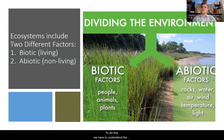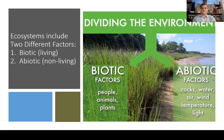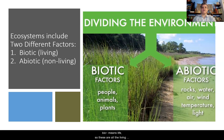To do this, we have to understand the two different factors that exist in an ecosystem. The first is biotic. Bio, as you recall from the introduction to your biology class, means life. So these are all the living things that exist within the environment. That could include people, animals, plants, etc.